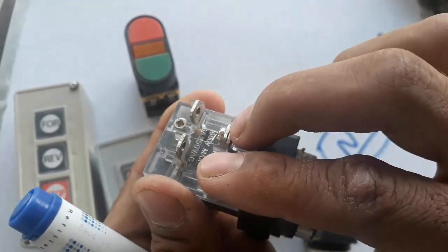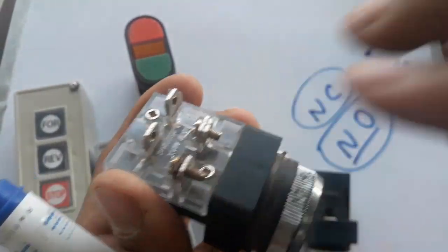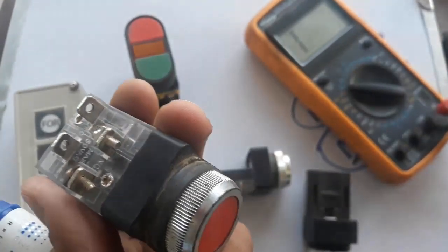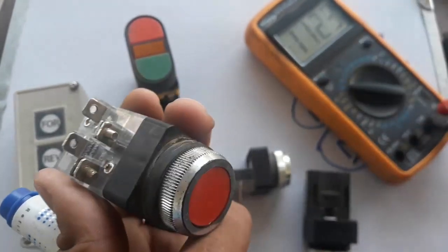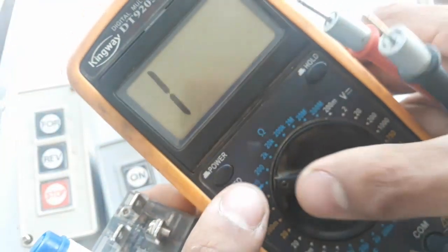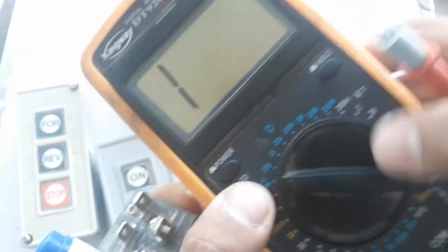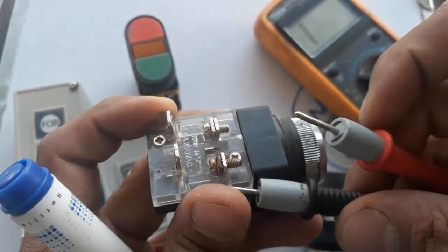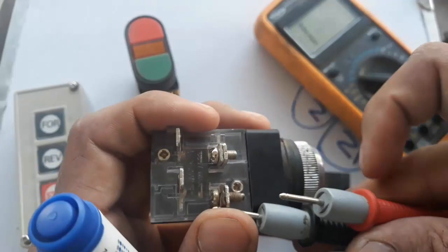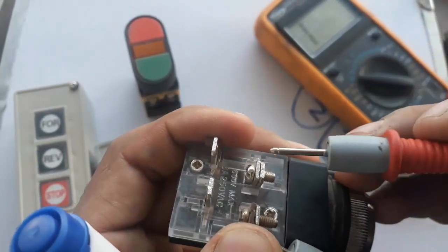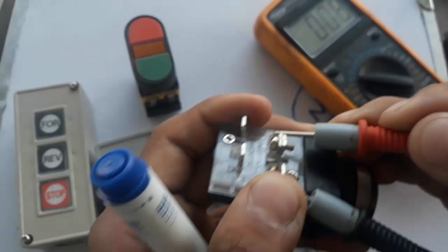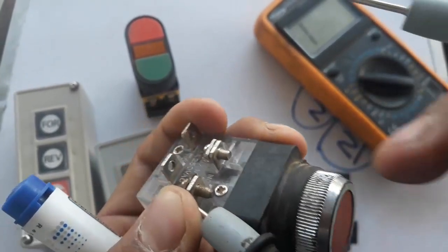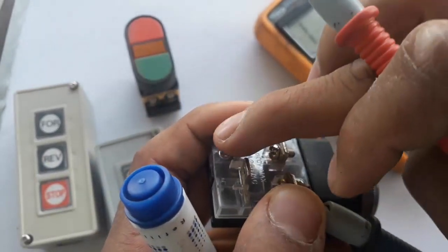So this is normally closed, which means that it has a connection between one another. If I check it using a multimeter, I set the multimeter on continuity testing. So these two terminals are NC with one another. You can see that it has connectivity, and if I push it, it will be open and it will be closed.